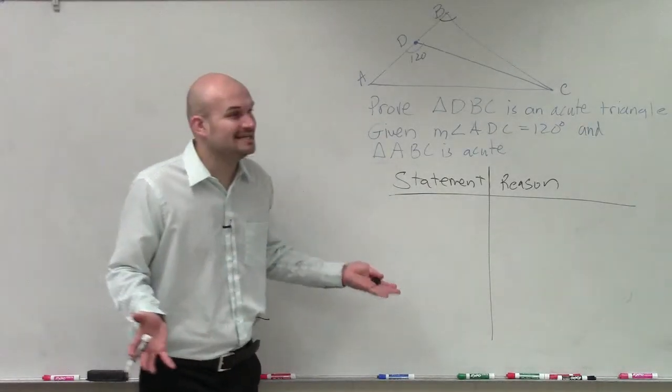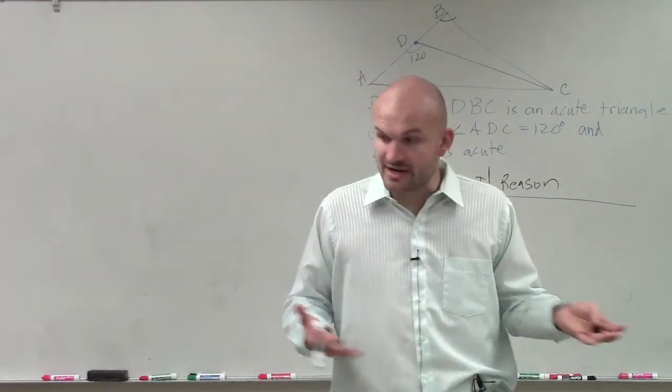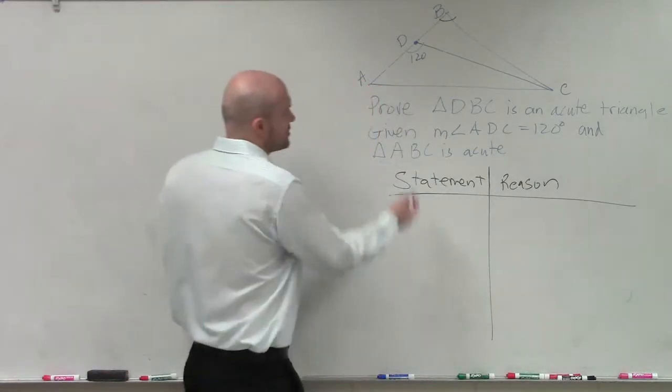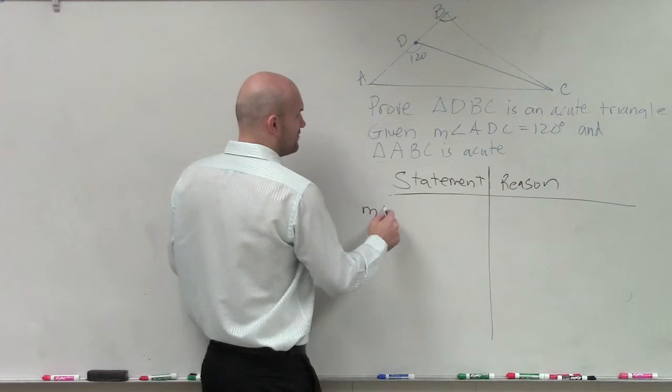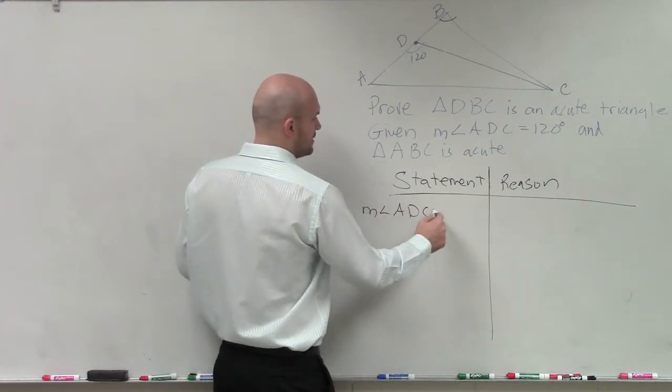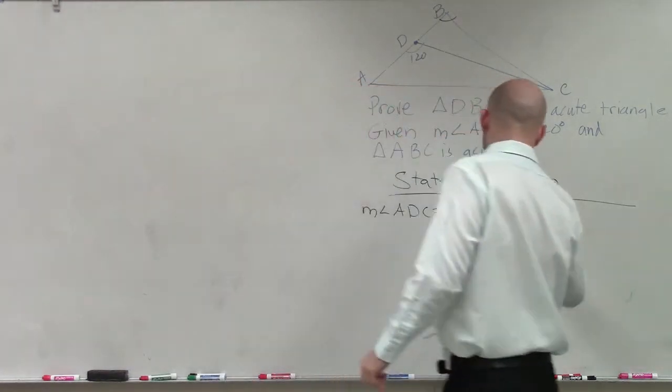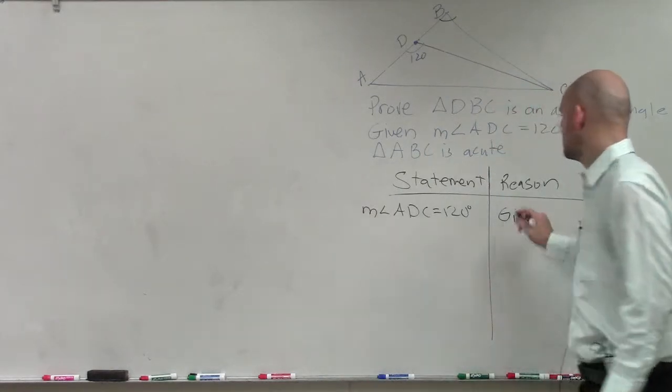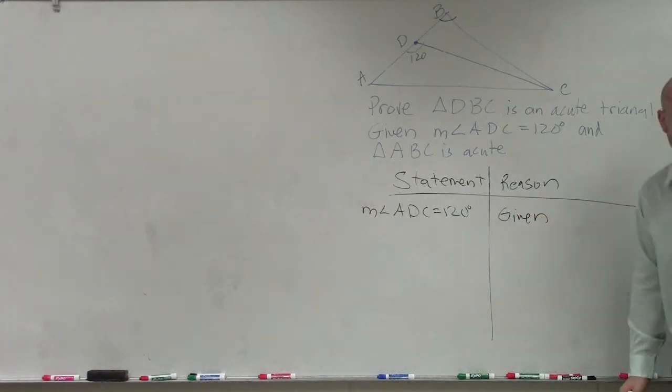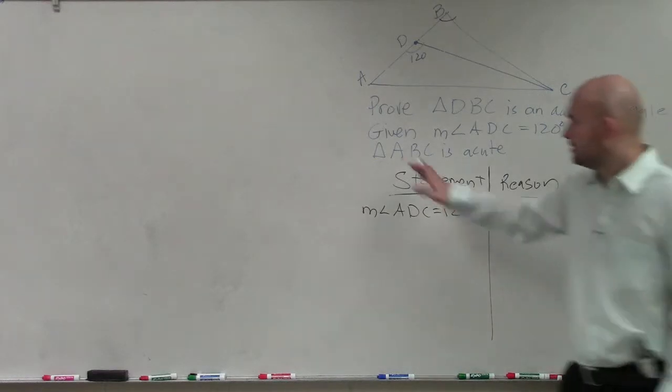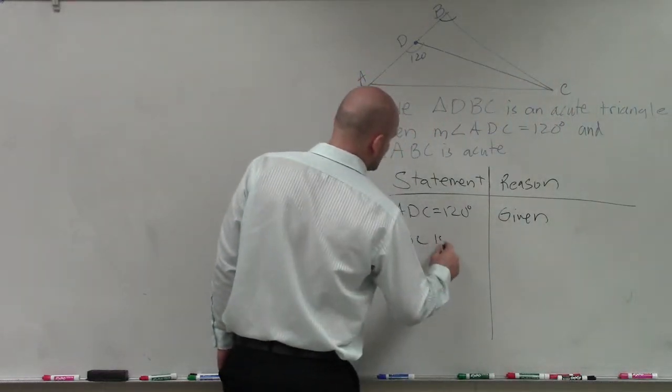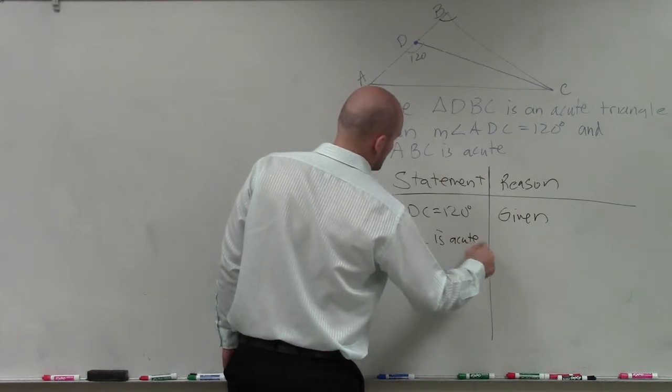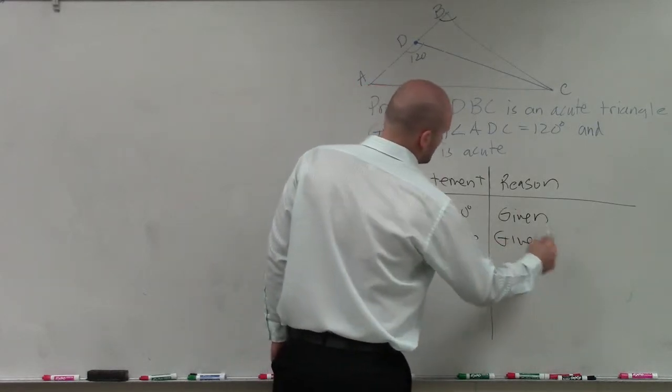Now, the first thing and the easiest is to always take down our givens, right? Take what we are given. So we are given measure of angle ADC is equal to 120. Why do we know that? Because it's given. And what else do we know? Triangle ABC is acute. That's given.